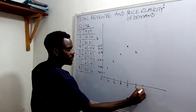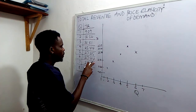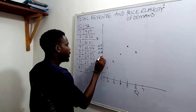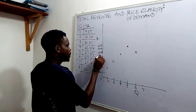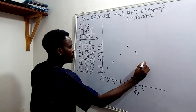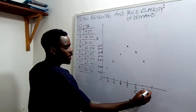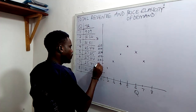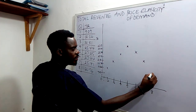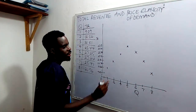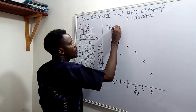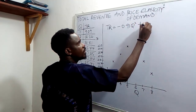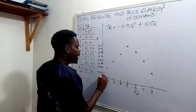When output is 7, the drop in total revenue is sustained, so we have another drop to 25.41. When output is 8, the total revenue is 21.76, which is another drop in total revenue. As such, based on the equation TR equals minus 0.91 Q squared plus 10 Q, our total revenue curve is N-shaped.